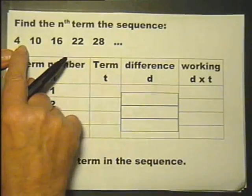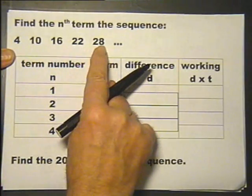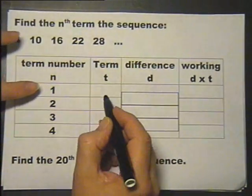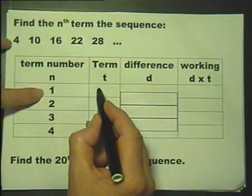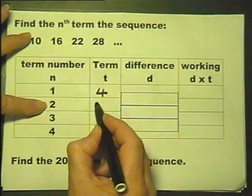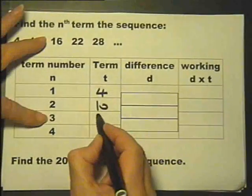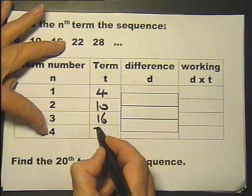Let's find the nth term, the formula, for working out any term in this sequence. First off, let's write down this table. Term 1 is 4. Term 2 is 10. Term 3 is 16. Term 4 is 22.